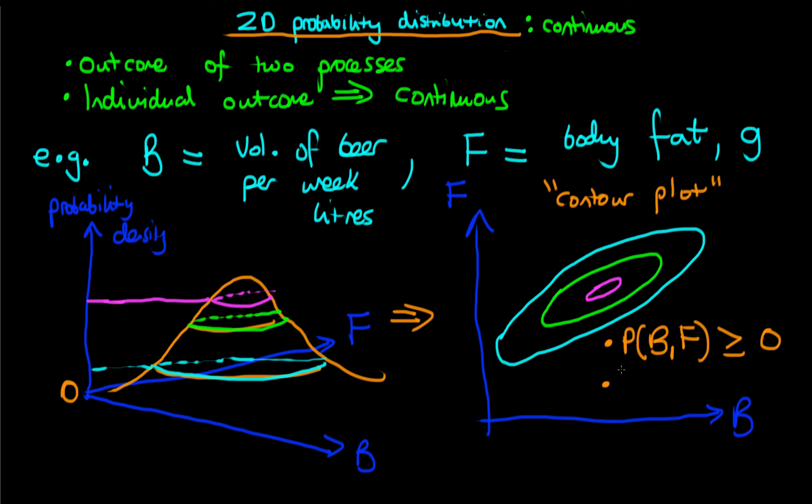Now, because we're dealing with continuous variables, what we do is we do two integrals. We integrate the probability distribution function, now of two variables B and F, between B being between zero and infinity and F between zero and infinity.